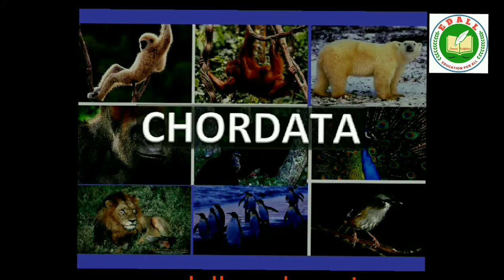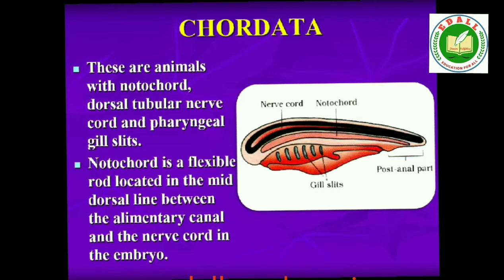4.2.11 Phylum Chordata. Animals belonging to Phylum Chordata are fundamentally characterized by the presence of a notochord, a dorsal hollow nerve cord and paired pharyngeal gill slits. These are bilaterally symmetrical, triploblastic, coelomate with organ system level of organization. They possess a post-anal tail and a closed circulatory system.